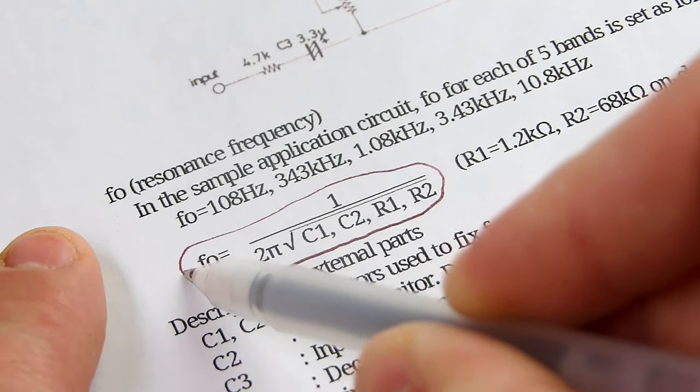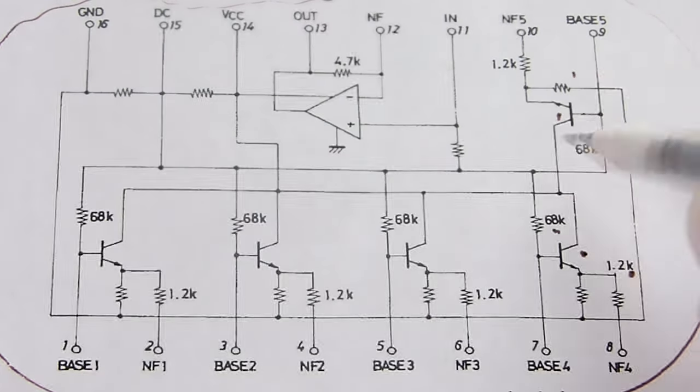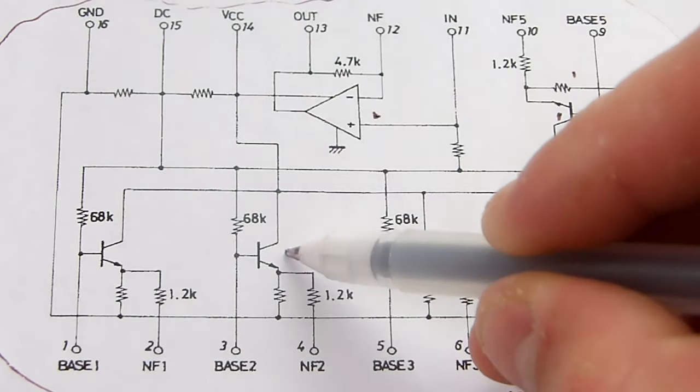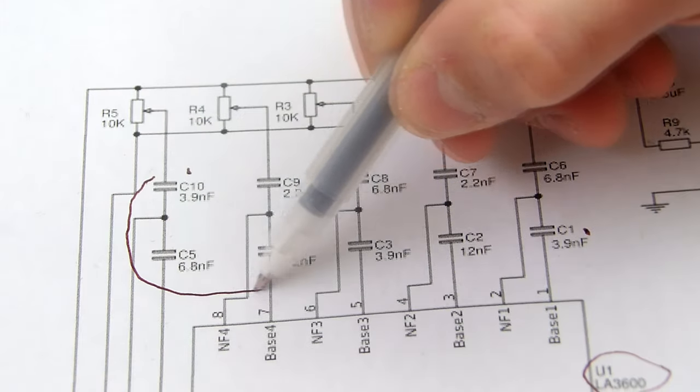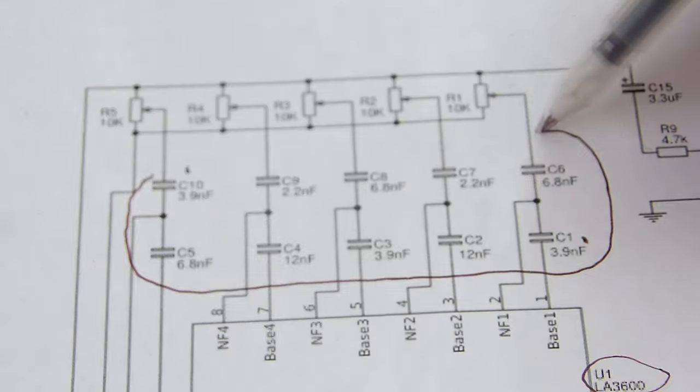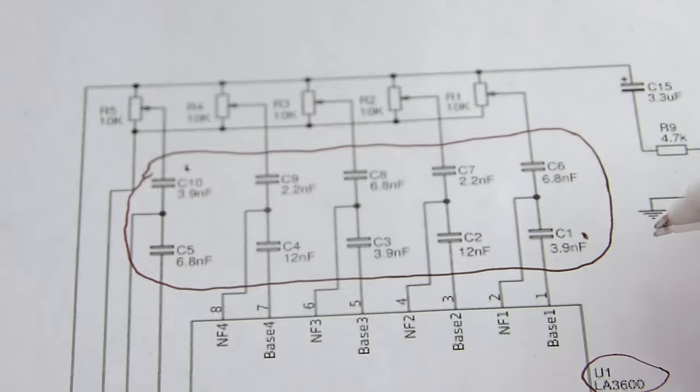How do you calculate it? In this example, the IC has two internal resistors: R1 which is 1.2K and R2 which is 68K. The only thing remaining to add to the formula is C1 to C10, which can vary slightly for increasing or decreasing the cutoff frequency.